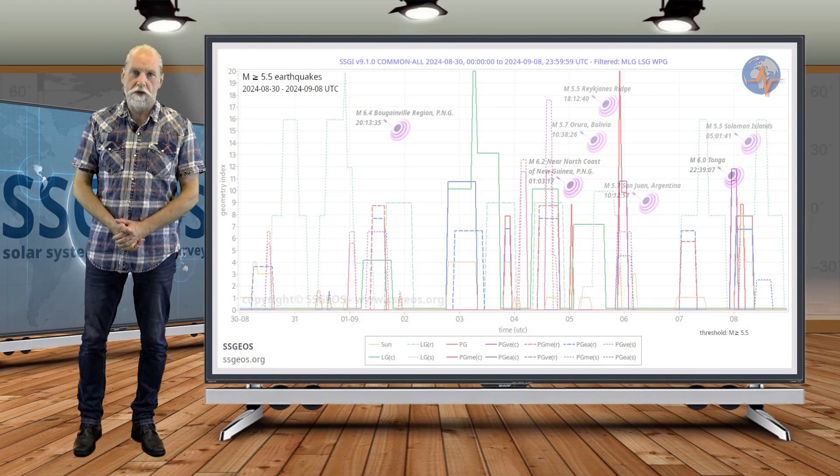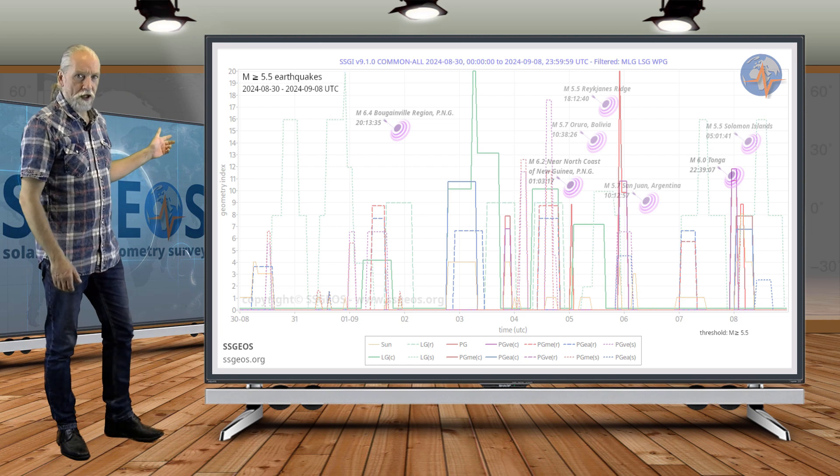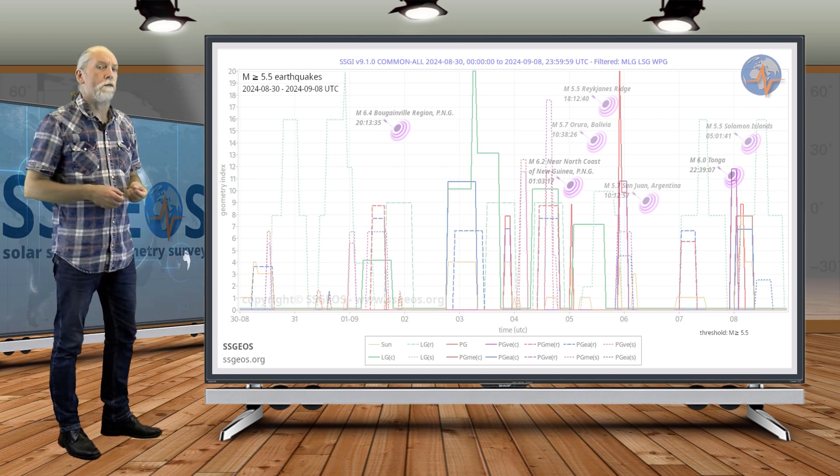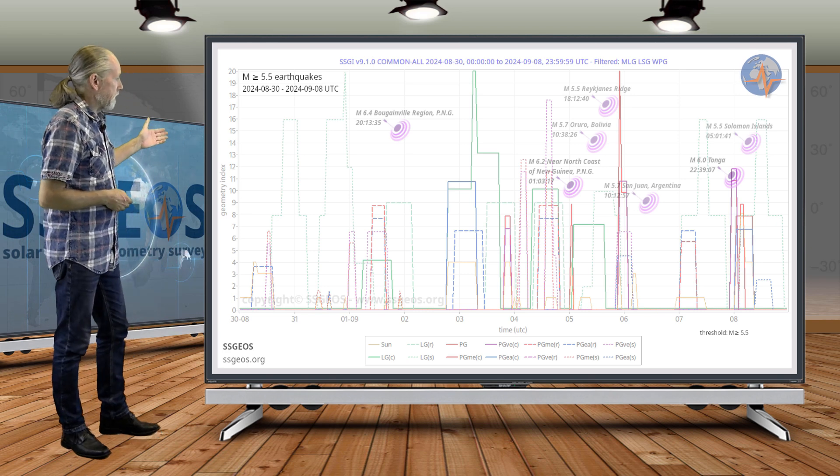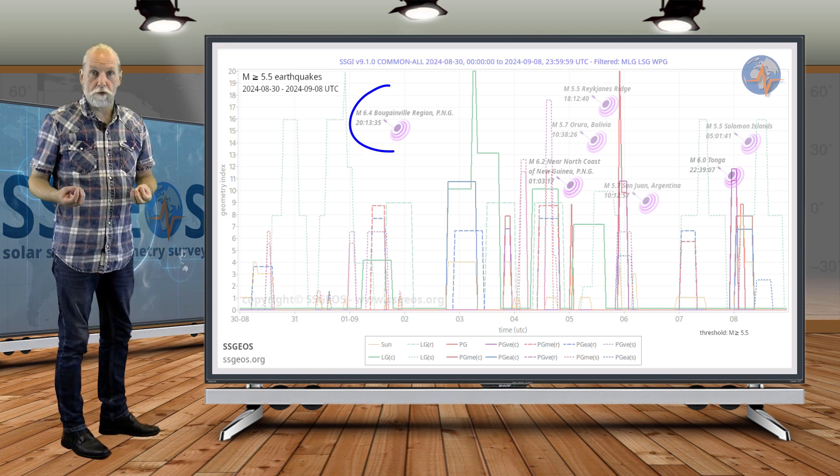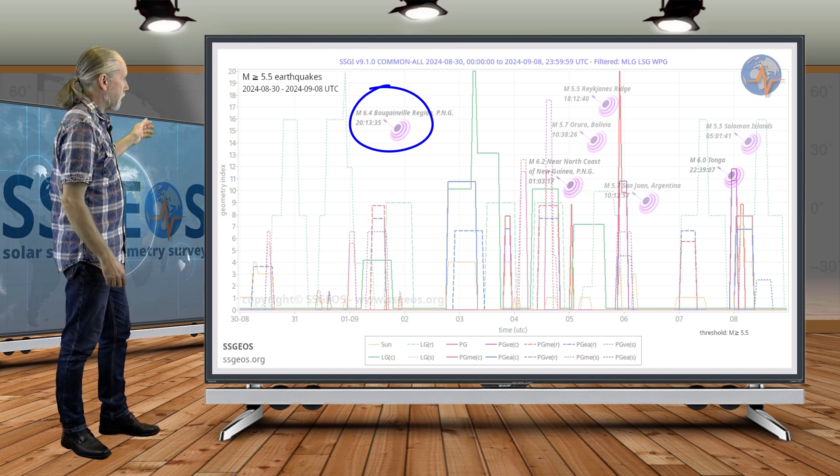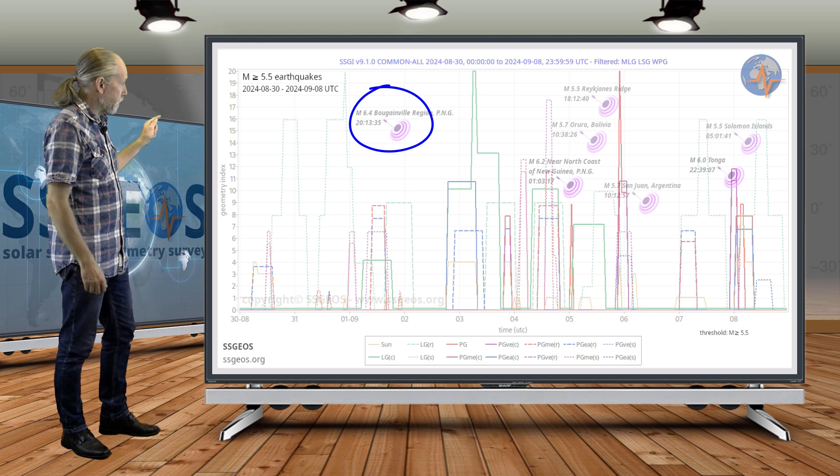Welcome to a new planetary and seismic update. You see the SSGI graph here from the previous timeframe with earthquakes magnitude 5.5 and larger. As you can see, later on the 1st we did have a stronger earthquake. It didn't reach magnitude 7, it stayed actually at 6.4, 6.5 magnitude at the Bougainville region in Papua New Guinea.